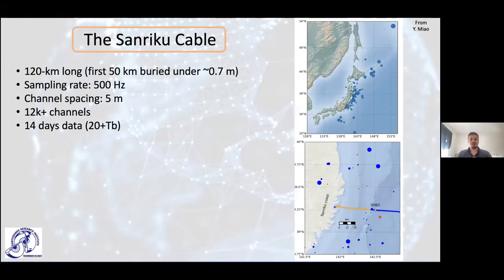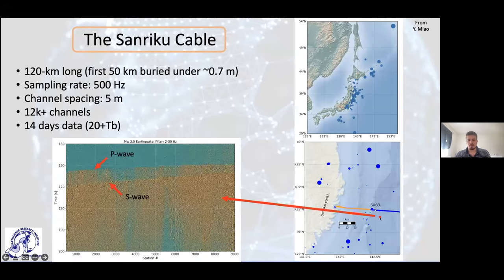During those 14 days of data we recorded hundreds of earthquakes. Here I'm showing only those with a really good signal-to-noise ratio — from magnitude 1.1 up to a 6.5 deep earthquake. For this magnitude 2.5 earthquake that happened right below the cable, we can see a clear P wave, then a clear S wave. What is pretty striking is that the ground motion lasts for over a minute for a magnitude 2.5, which is pretty unusual.